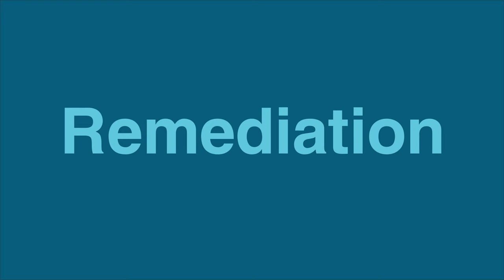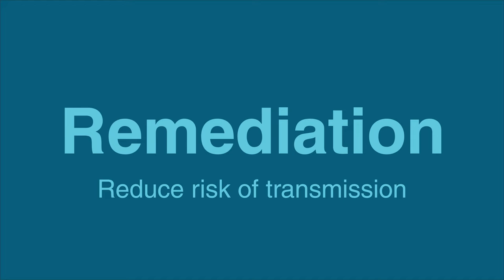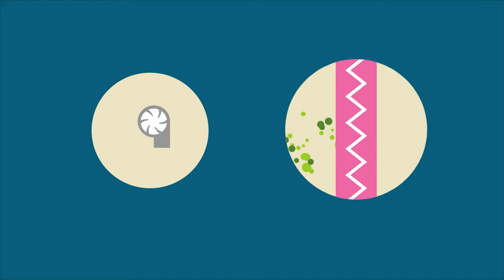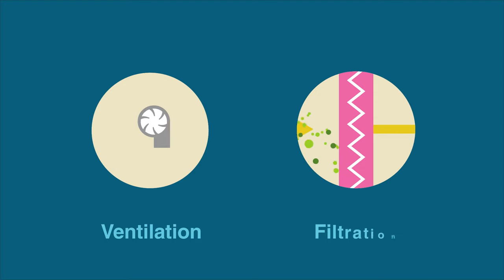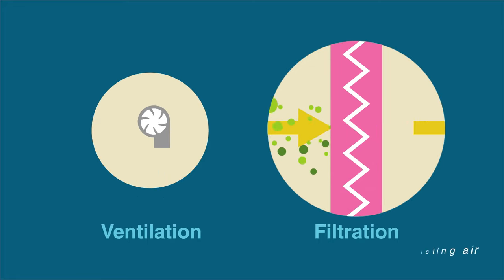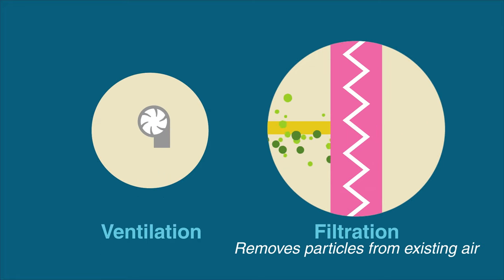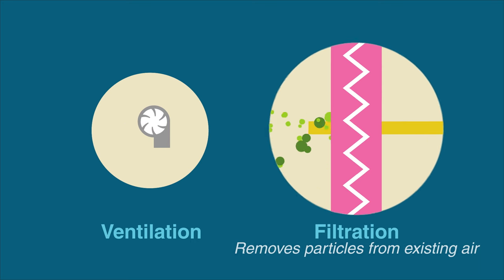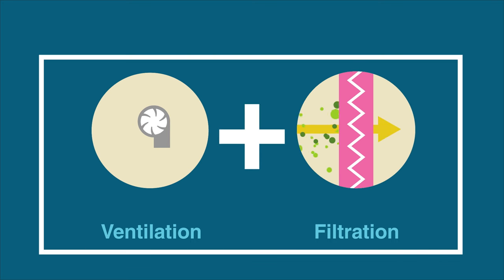We can also use the third R — remediation — to remove disease-carrying particles from the air and reduce, but not eliminate, the risk of transmission. Remediation includes ventilation and filtration. Ventilation brings fresh new air into a room to flush out old air, while filtration uses filters and portable air cleaners to remove particles and other pollutants from the air. Both processes help keep the concentration of disease-carrying particles low.